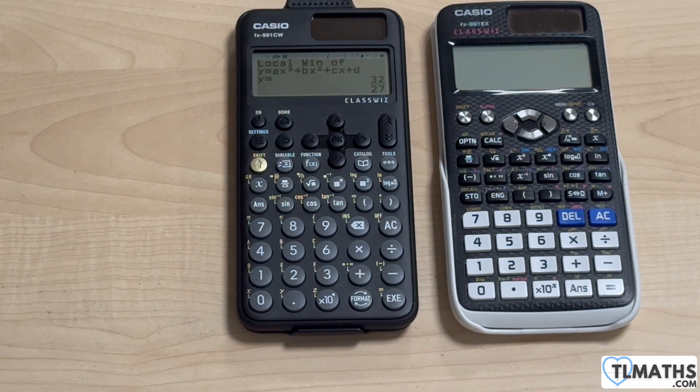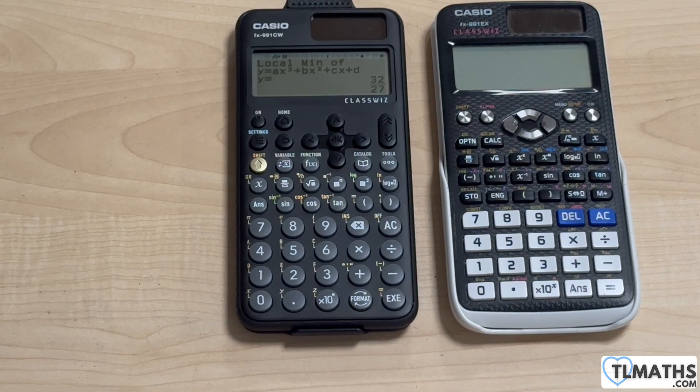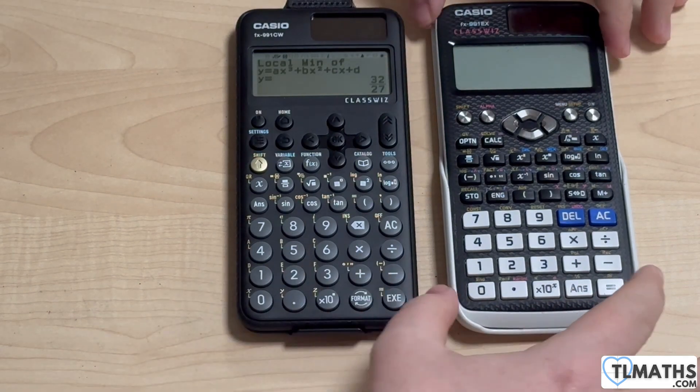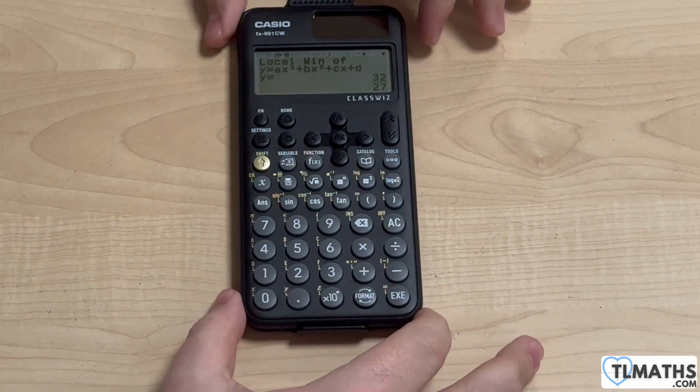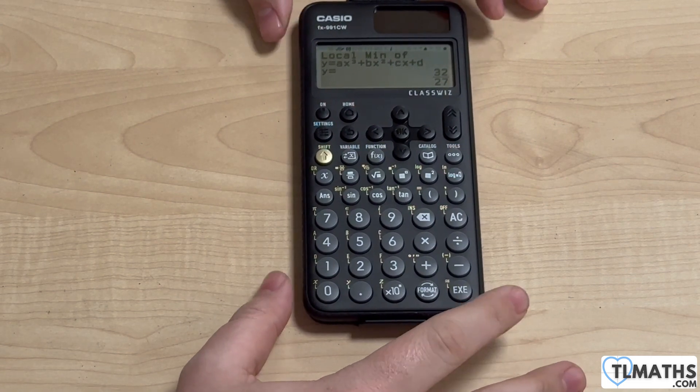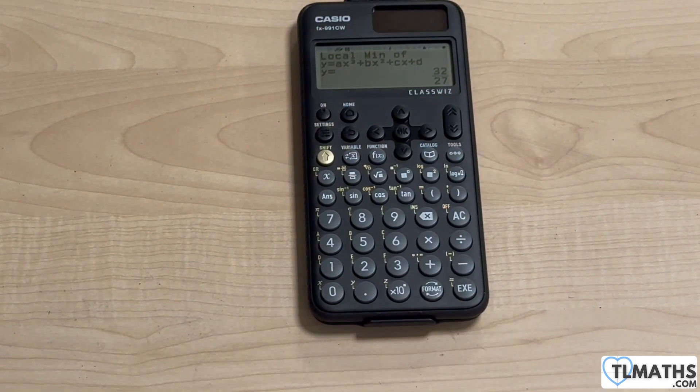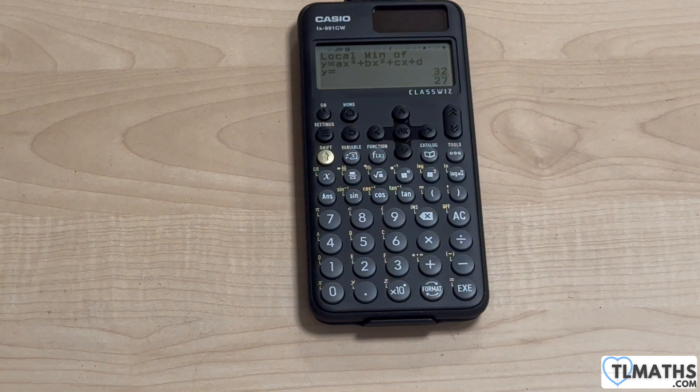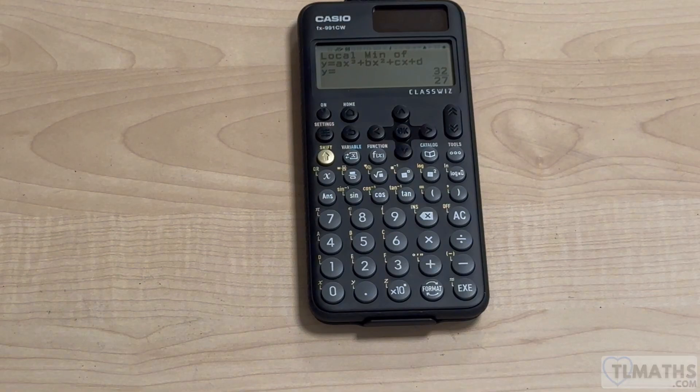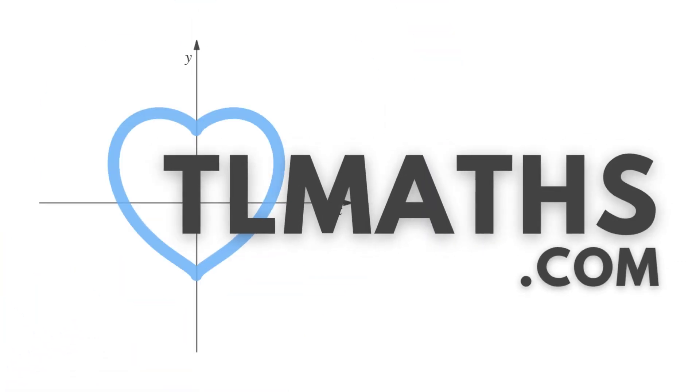But the solver is really good. And there are some good elements. But this is the, let's get rid of this one now, bye bye. This is the one that we are now going to be working with for A level maths. So yeah, that's the Casio FX-991-CW.